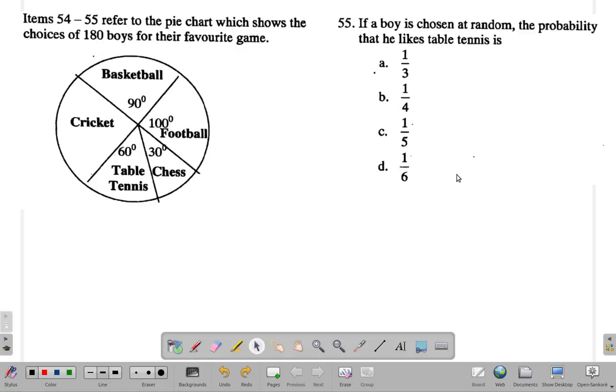And then probability is how many you're interested in divided by the total that is available there. So here now, we're interested in how many boys choose table tennis.